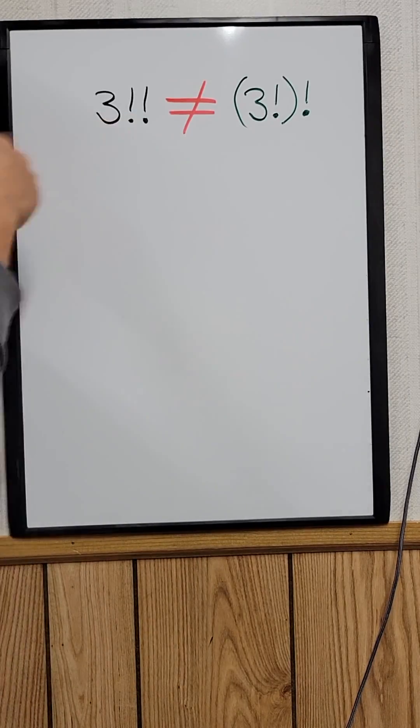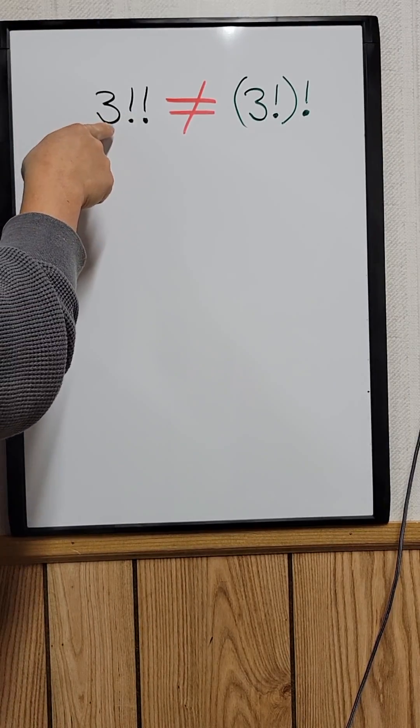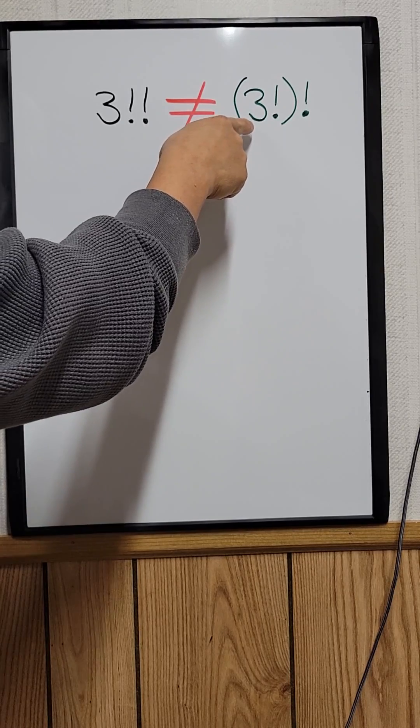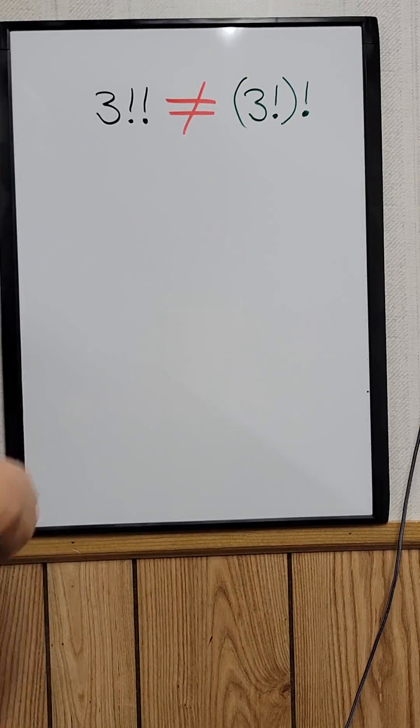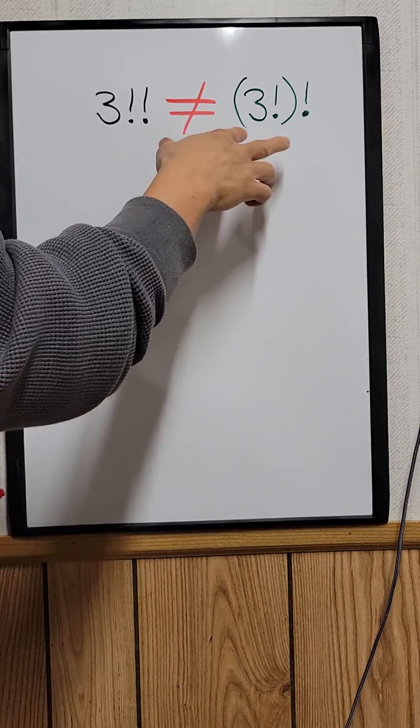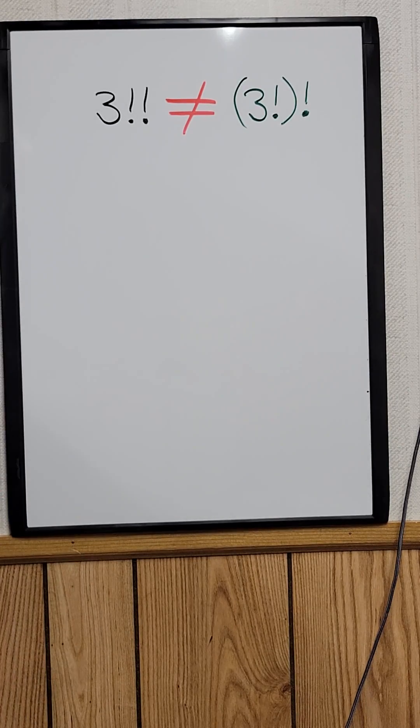Well, most people are going to get this wrong because they think that 3 double factorial is equal to bracket 3 factorial factorial, which they are not equal. Let me show you why they're not equal.